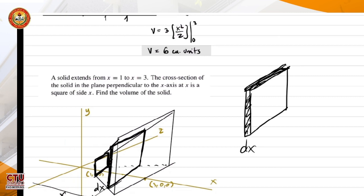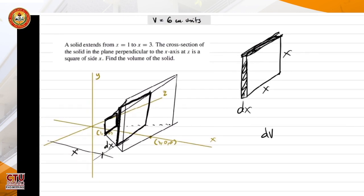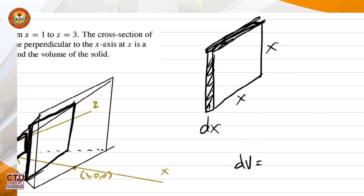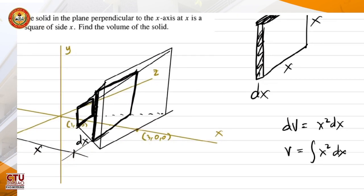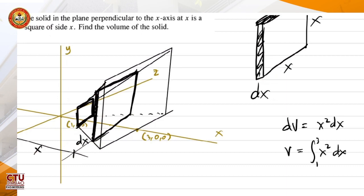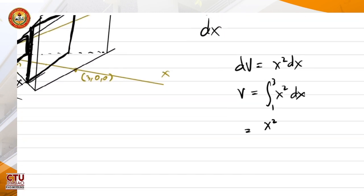If we isolate a slice, it is shaped as a square with side x and thickness dx — so it is x by x. The differential volume is just the area of the square times its thickness: x squared dx. Therefore, the volume is the integral of x squared dx from x equal to 1 to x equal to 3, which evaluates to x cubed over 3 from 1 to 3.